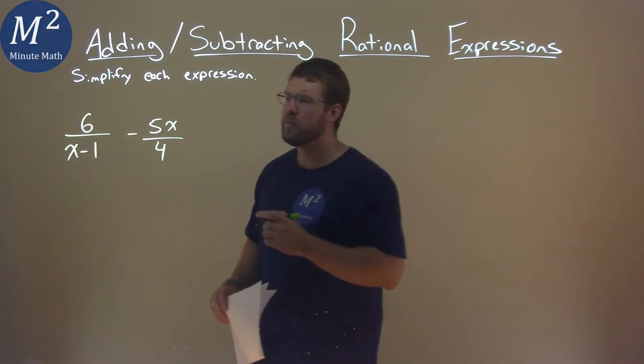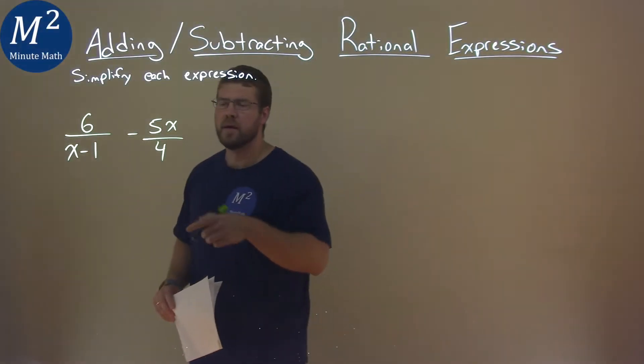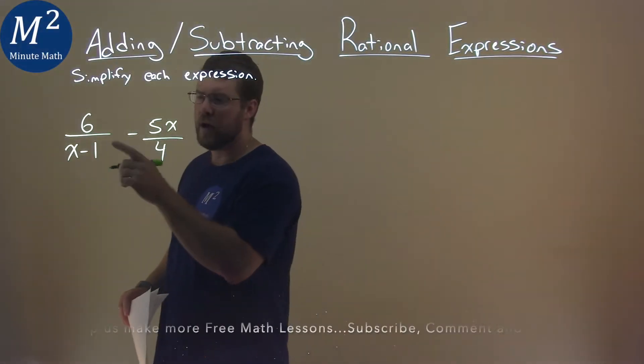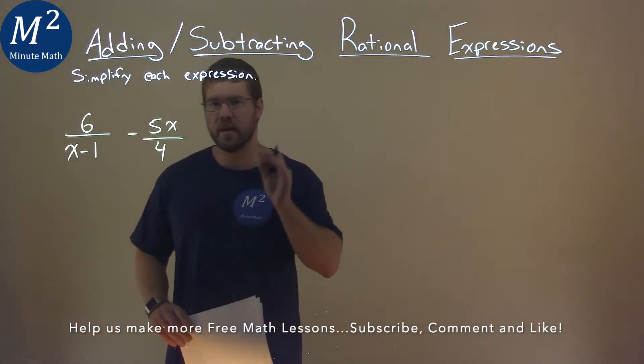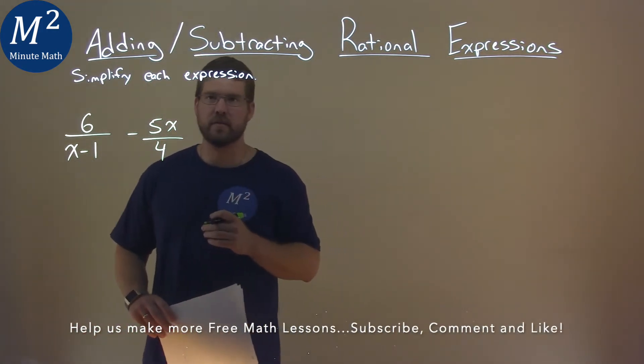We're given this problem right here: 6 over x minus 1, minus 5x over 4, and we've got to simplify this.